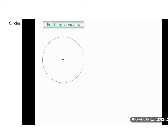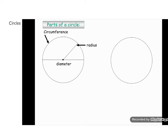Before we can get to the new theorems, we need to make sure that we know all the terminology for circles. When you move right around the outside of a circle, it is called the circumference of the circle. You can draw a line from the circumference right through the center of the circle to the other side — that is called the diameter. If you draw a line from the center of the circle to the circumference, it is called the radius. A line from the circumference through the circle to the other side on the circumference, but not necessarily going through the center, is called a chord.